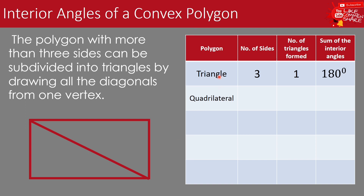We have the polygon triangle: the number of sides is three, the number of triangles formed is one, and we don't have a diagonal from a triangle. The sum of the interior angles is 180 degrees. For the quadrilateral, after drawing a diagonal from one vertex, the number of sides is four.